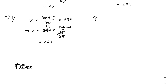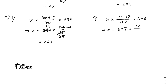Part 2: on decreasing a number x by 18 percent it becomes 697. So x into (100 minus 18) divided by 100 equals 697. Therefore x equals 697 into 100 by 82. Dividing 82 by 2 gives 41, and 100 by 2 gives 50. Then 697 divided by 41 equals 17, and 17 into 50 equals 850.